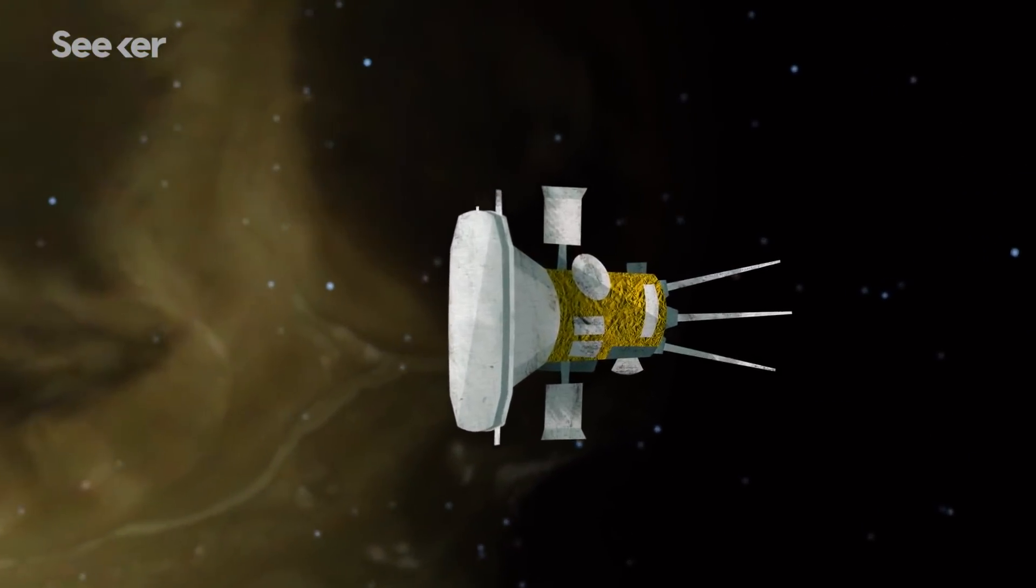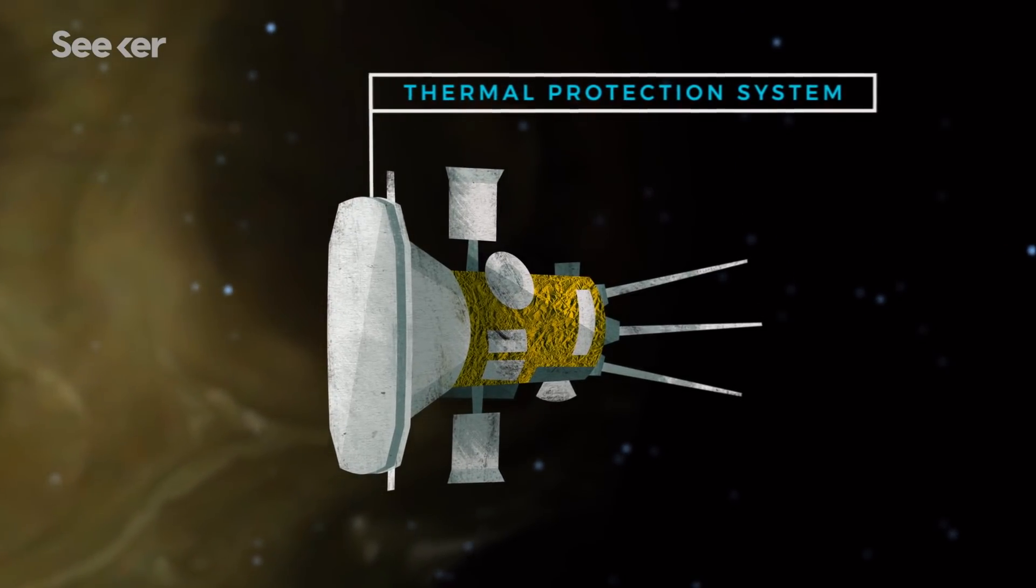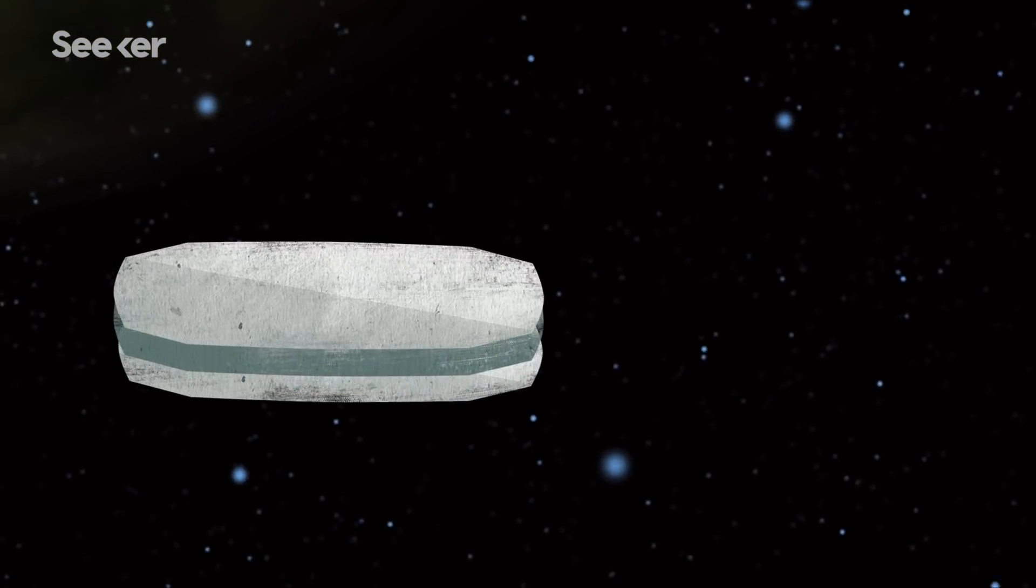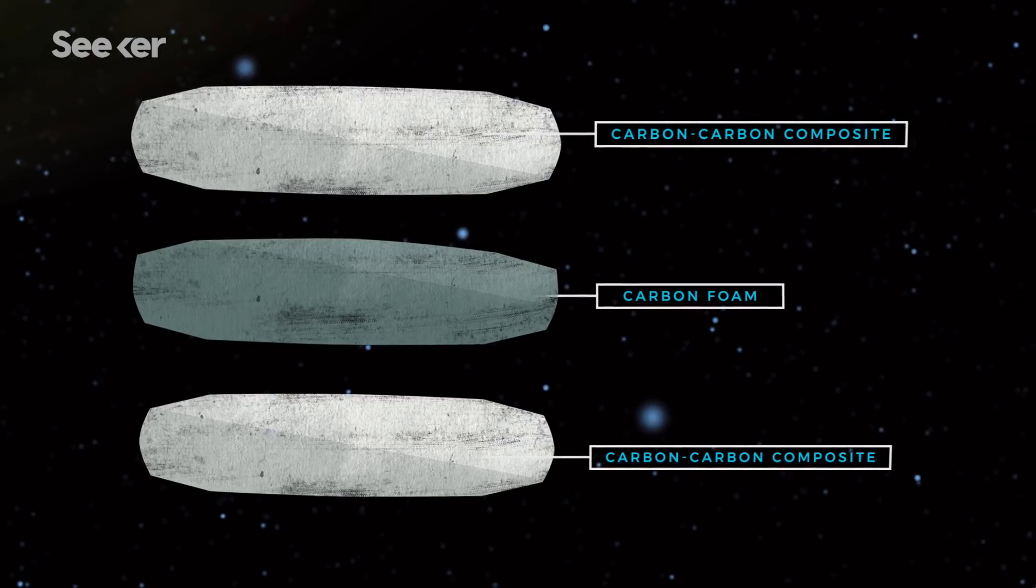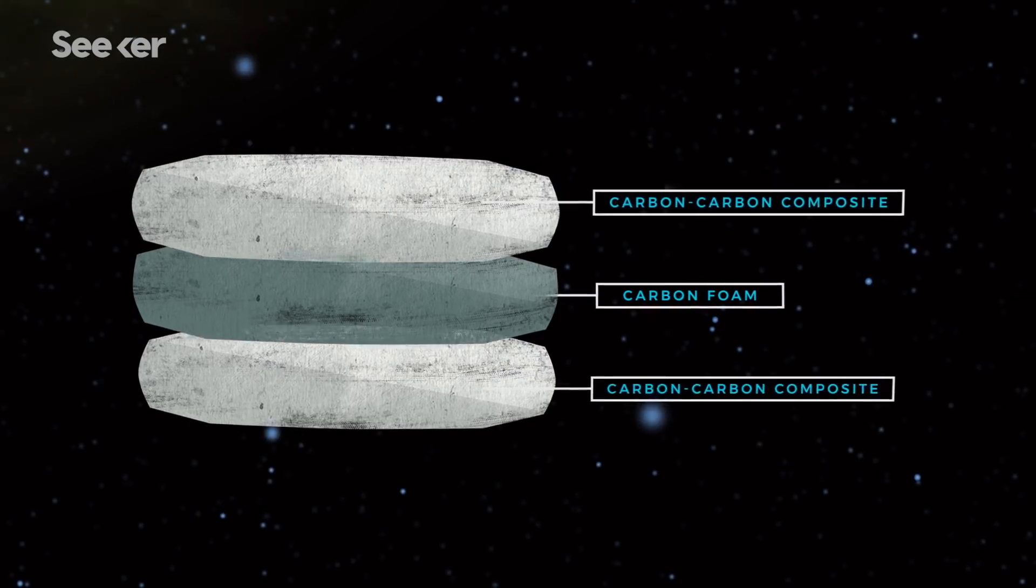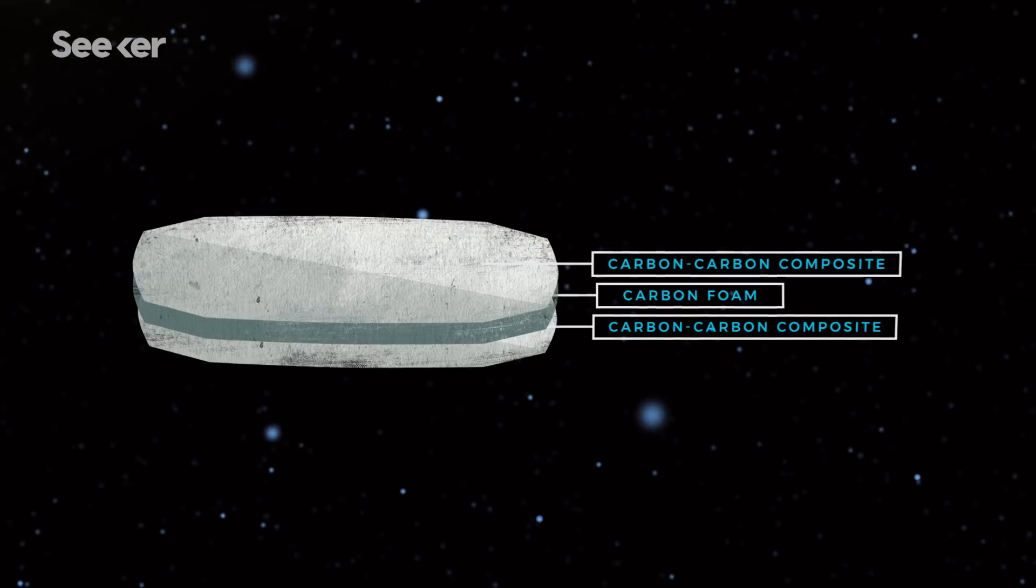And that's because of the probe's Thermal Protection System, or TPS. The spacecraft and its instruments are shielded by an 11-centimeter-thick piece of carbon foam sandwiched between two panels of superheated carbon-carbon composite.